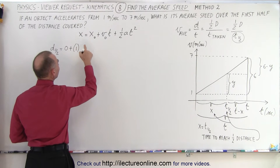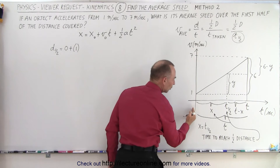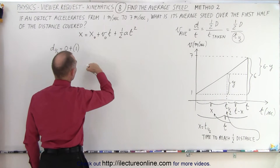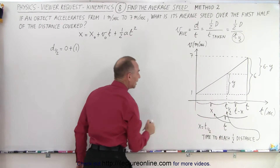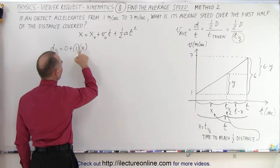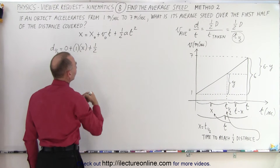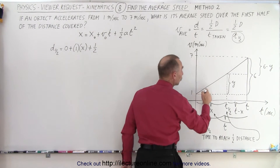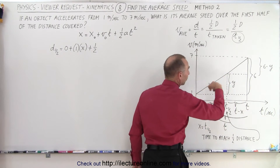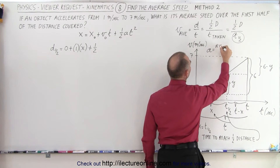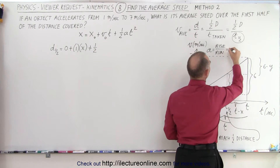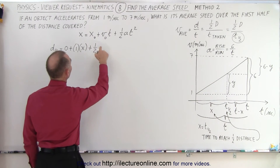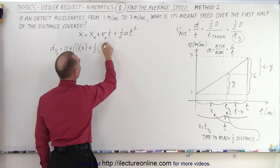The distance to the halfway point equals the initial position — which we call X-naught, set to zero — plus the initial velocity of one meter per second times the time to reach the halfway point. We'll call that time X (short for T sub one-half) to make things easier. Now we also need the acceleration. Acceleration equals the slope of the line on a velocity-versus-time graph, which is rise over run: six divided by T, where T is the total time to reach the full distance. So acceleration equals 6/T.